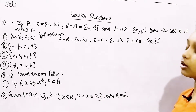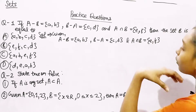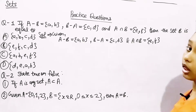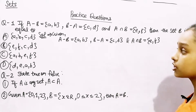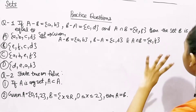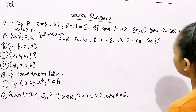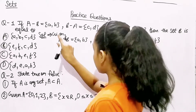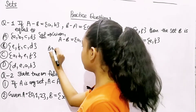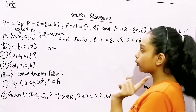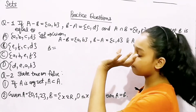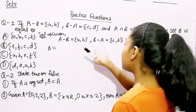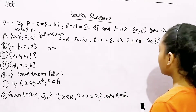We have to find set B. According to the options we're pretty sure there will be four elements in set B. Let's figure out what they are. First, let's look at the differences of both sets. A minus B = {a, b} and B minus A = {c, d}. For now let's set aside the intersection.